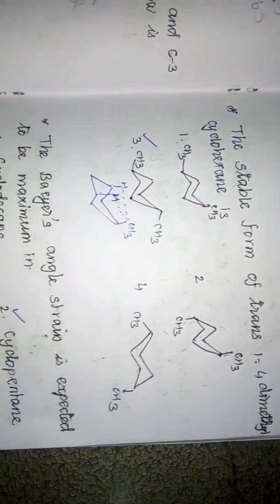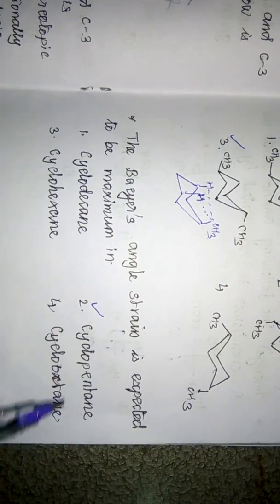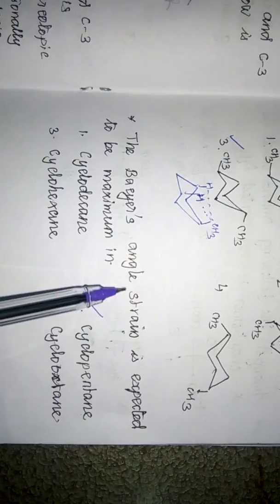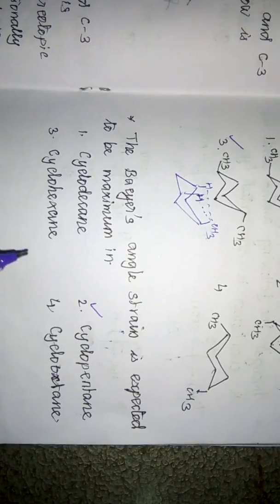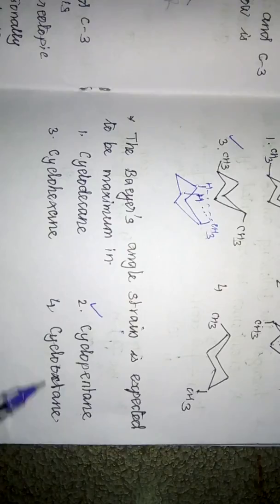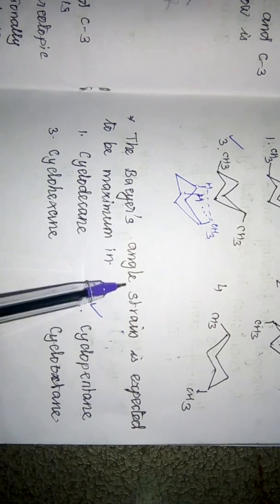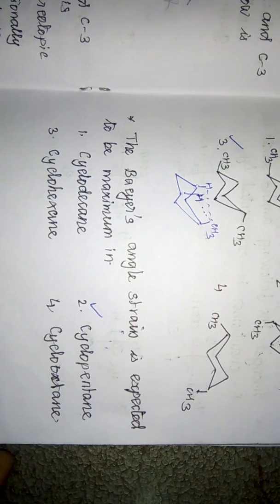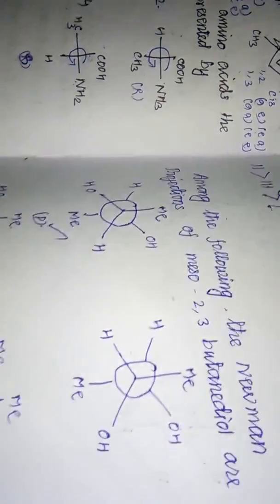The next question asks where Baeyer's angle strain is expected to be maximum. Baeyer's angle strain is maximum where the ring size is smallest. Among the options — cyclodecane, cyclopentane, cyclohexane, and cyclobutane — cyclobutane has the lowest ring size, so it will have the maximum Baeyer's angle strain.